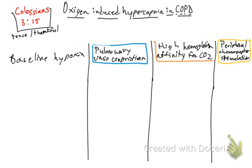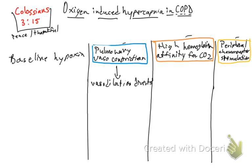If we have baseline hypoxia, it induces pulmonary vasoconstriction. This pulmonary vasoconstriction is going to cause vasodilation after oxygen administration. So baseline hypoxia causes pulmonary vasoconstriction, and then after oxygen is given, that vasoconstriction reverses to vasodilation, which diverts blood from well-ventilated regions.